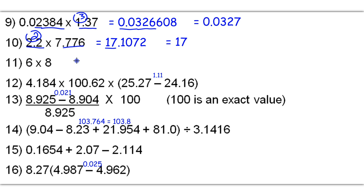6 times 8 is equal to 48. However, because we have 1 sig fig for each of our givens, that means our answer can only be rounded to 1 sig fig. That 4 is going to round up to a 5, that 8 is going to drop and become a 0, and so that gives me a final answer of 50.